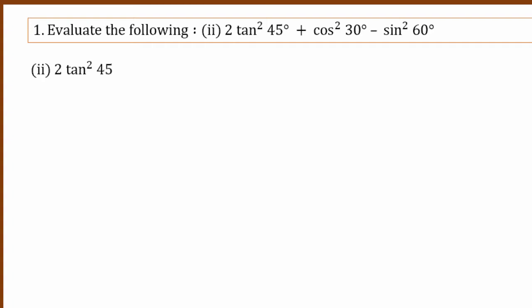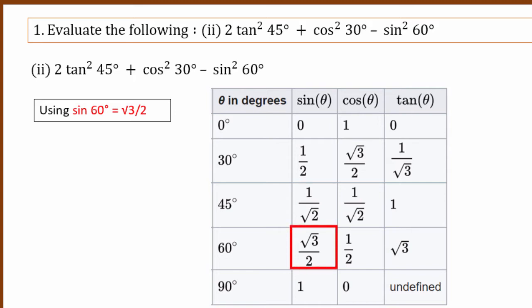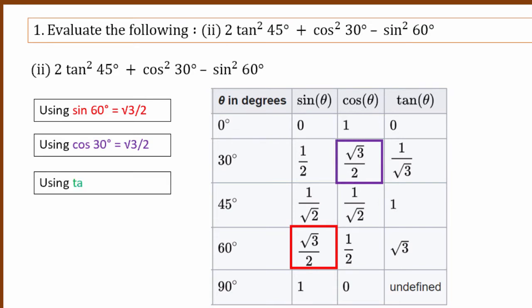The second question is: 2 tan squared 45 degrees plus 4 cos squared 30 degrees minus sin squared 60 degrees. From the table: tan 45 is 1 (green color), sin 60 is root 3 by 2 (purple color), and cos 30 is also root 3 by 2.